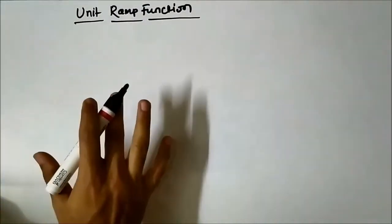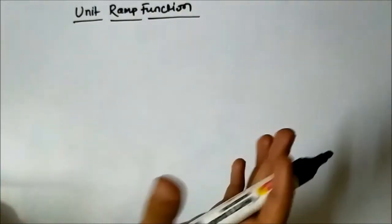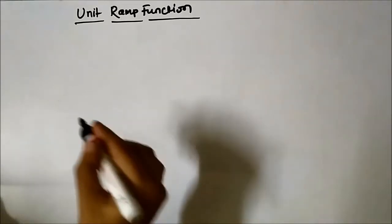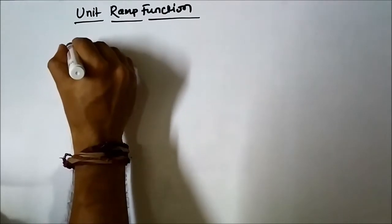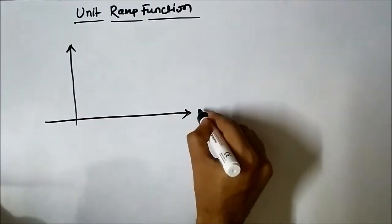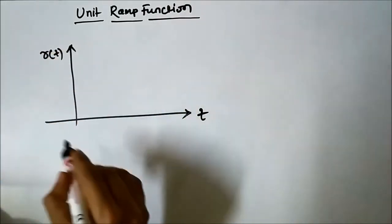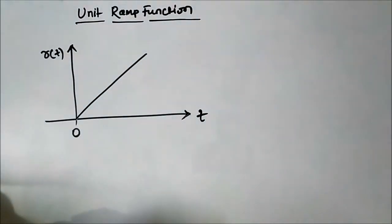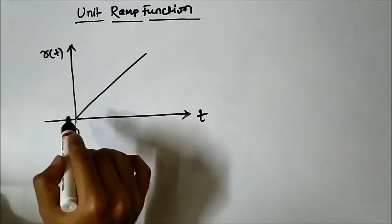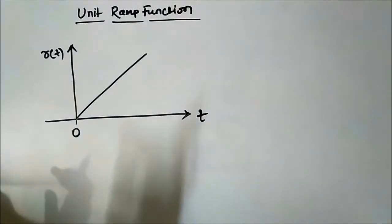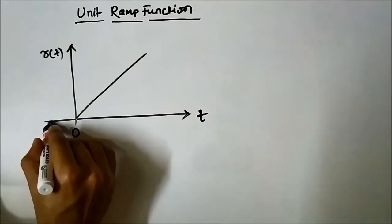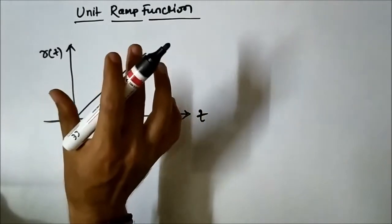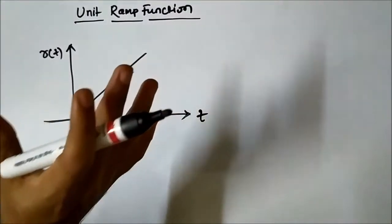First, the basic definition. The ramp function is a function which starts at time t equals to 0 and increases linearly with time. It exists for positive time duration — for t greater than 0 — and for t less than 0, it is 0. It increases linearly with time, meaning it has a constant slope.